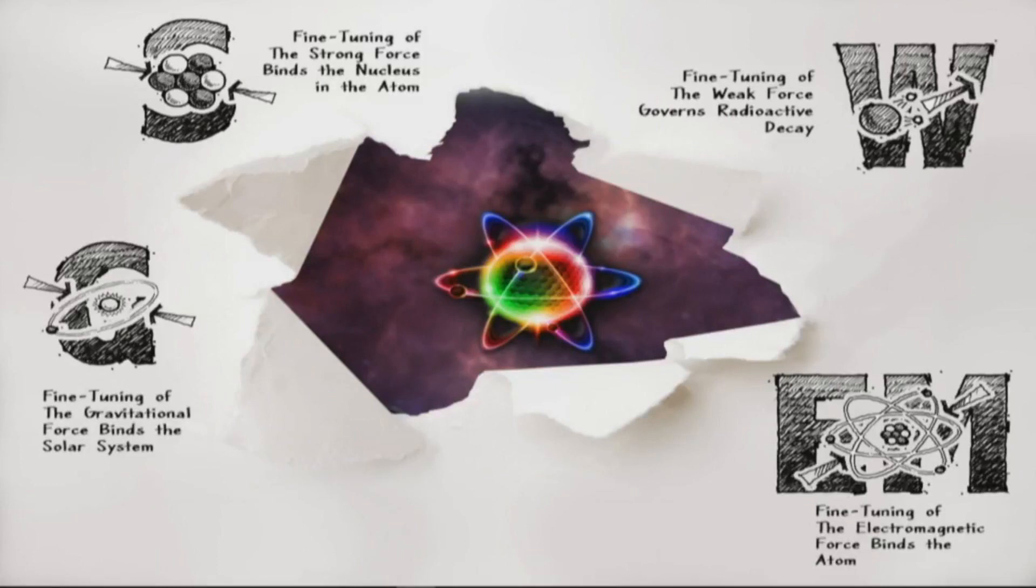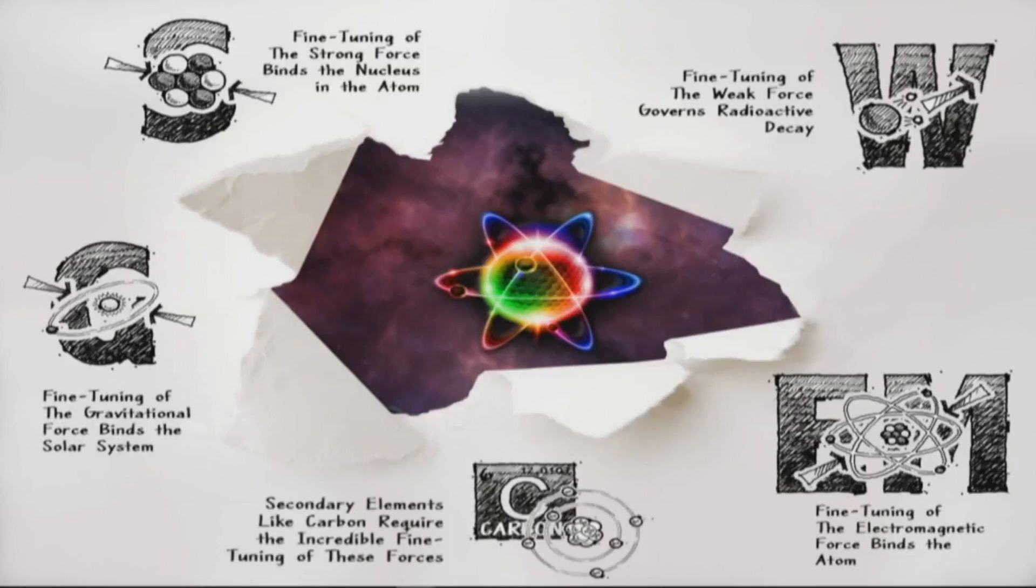It turns out even the elements in the universe, like carbon and helium, have to be set to a certain level or life does not emerge. And it turns out this fine-tuning is incredible and razor-thin, razor-sharpness, just a fraction of it in one direction or a fraction in the other direction. Life does not, the universe doesn't even hold together. Why is it this way?